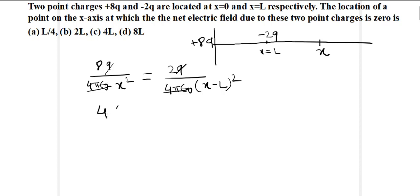4 times x minus L whole square is equal to x square. 2 times x minus L equal to x. 2x minus x is equal to 2L, or x equal to 2L.